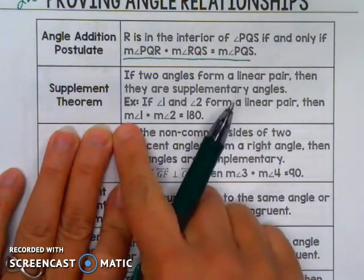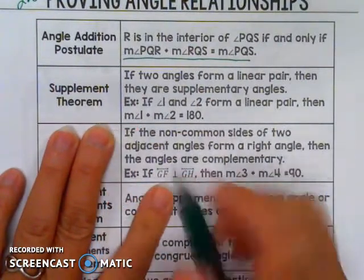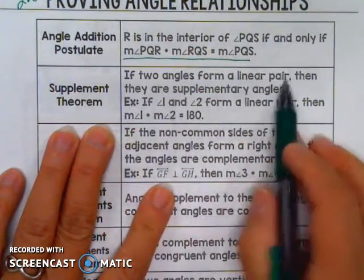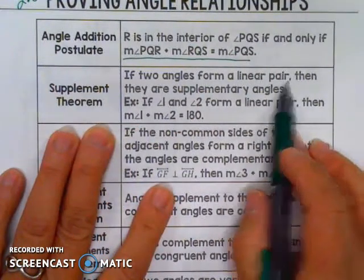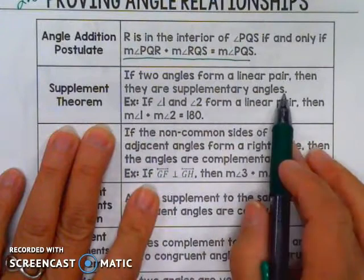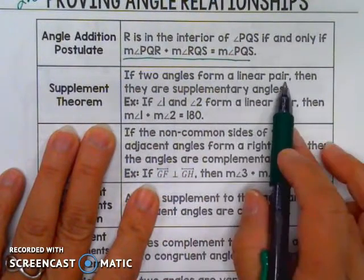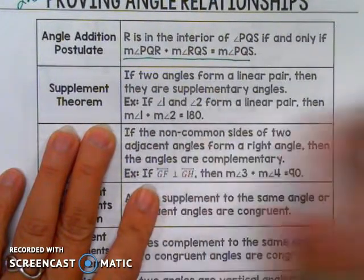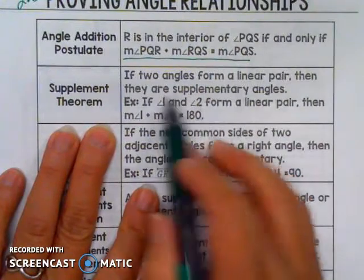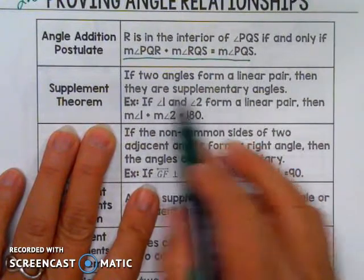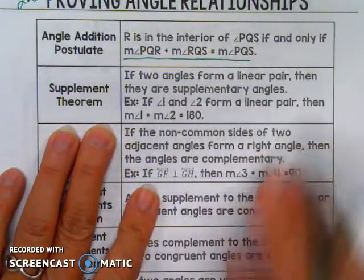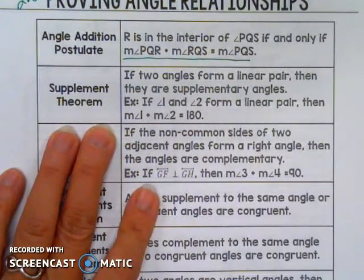The Supplement Theorem: if two angles form a linear pair, then they are supplementary angles. They form a linear pair — a straight line. Straight lines are 180 degrees, so the two angles must be supplementary.